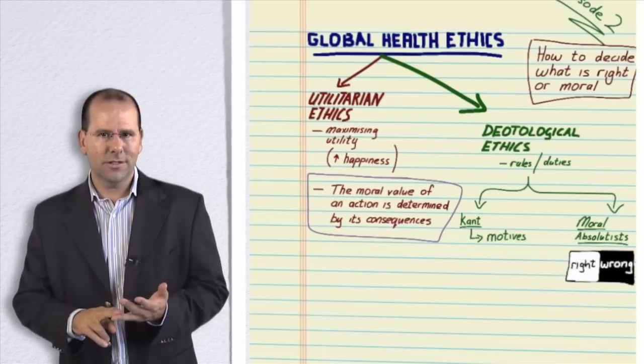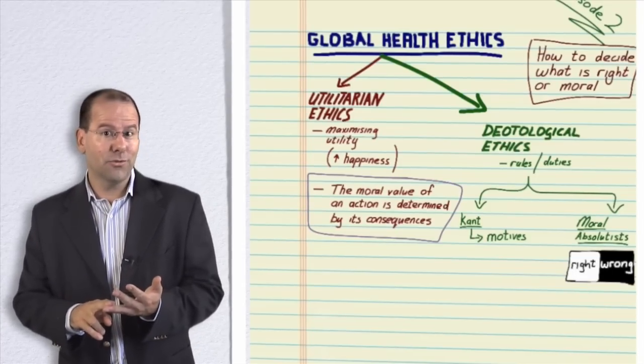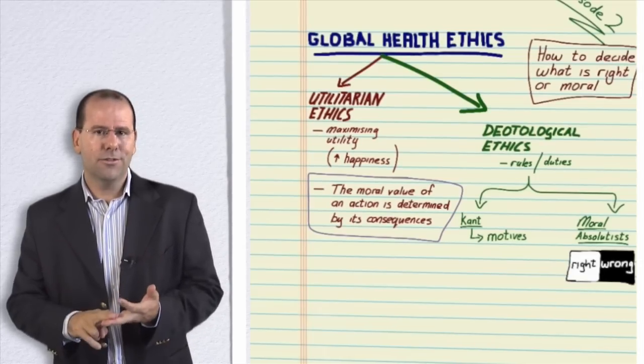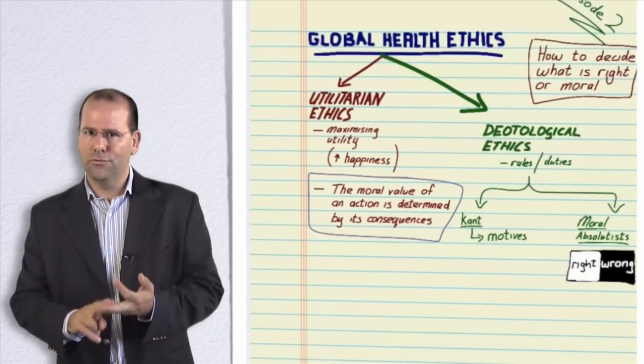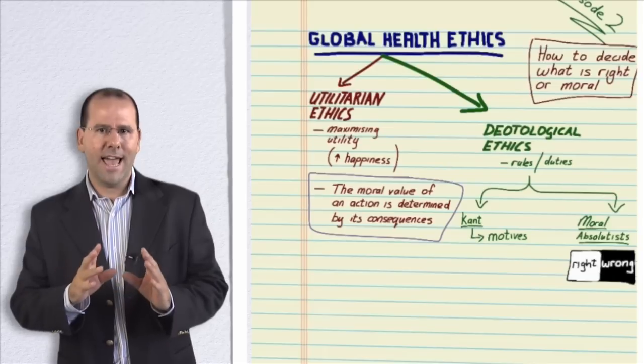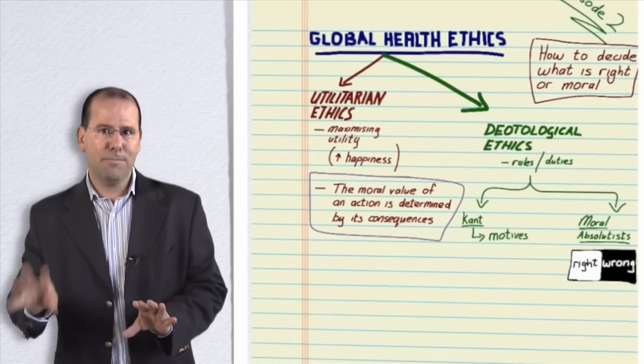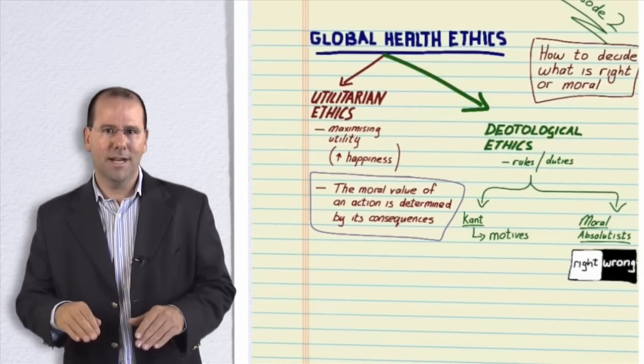The second is Kant's deontological ethics, which basically says whether something's right or wrong as a function of the motives behind the action. And the third is this absolutism. There's certain rules. There's right actions and wrong actions and they're right or wrong regardless of what happens because of them and regardless of the motives behind them.